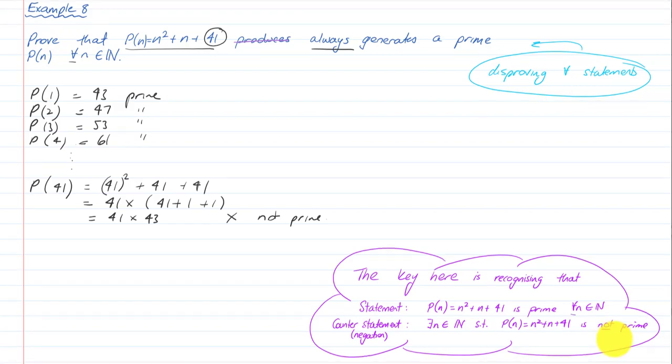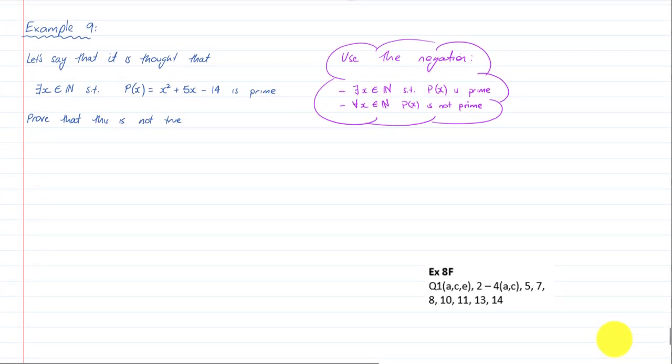Now we're going to look at disproving a 'there exists' statement, which is much harder. In Example 9, it is thought that there exists an x in the natural numbers such that P(x) = x² + 5x − 14 is prime. Prove that this is not true. If there exists means I can prove it true by finding one case, but if I can't find one case, then I've got a problem. So again, I might go and have a little search.